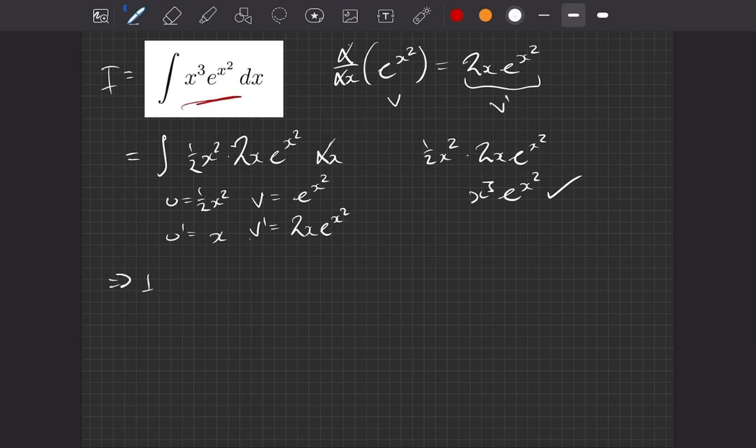So therefore, our integral is now going to be u times v. So it's a half of x squared e to the x squared minus the integral of u dash times v. So that's x e to the x squared with respect to x.